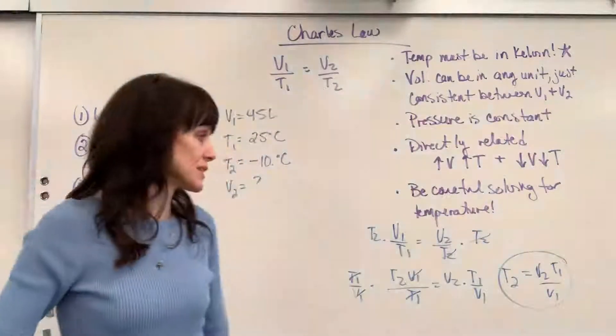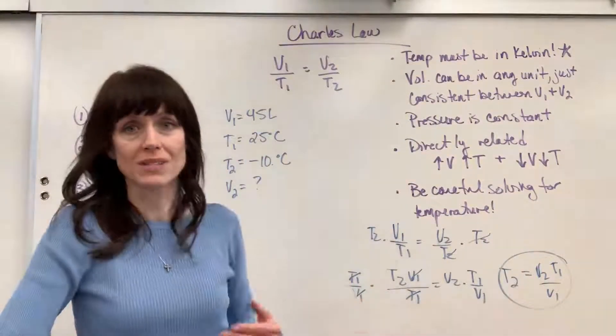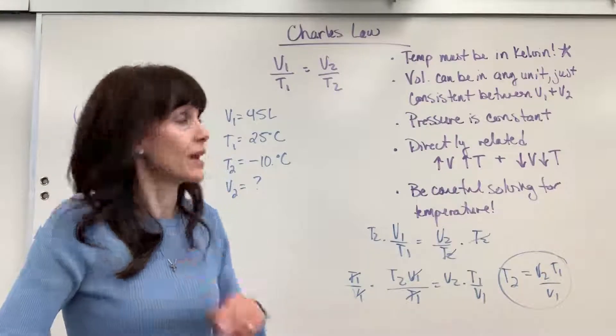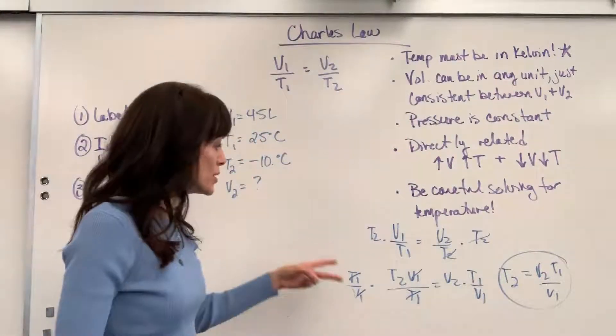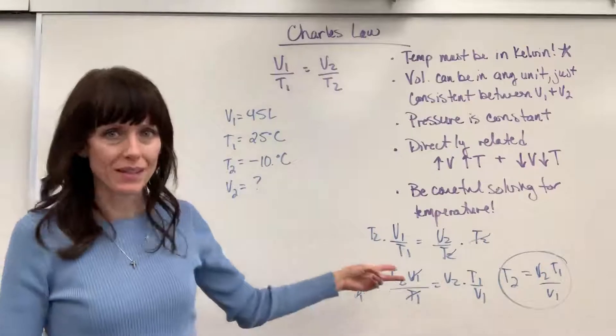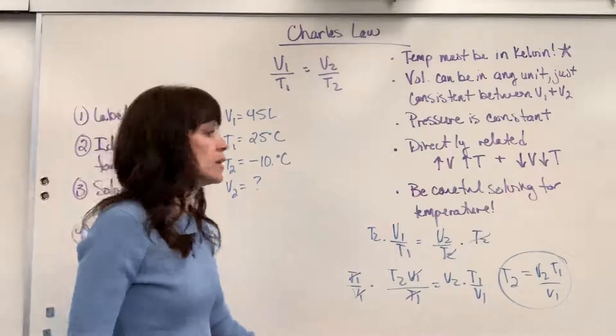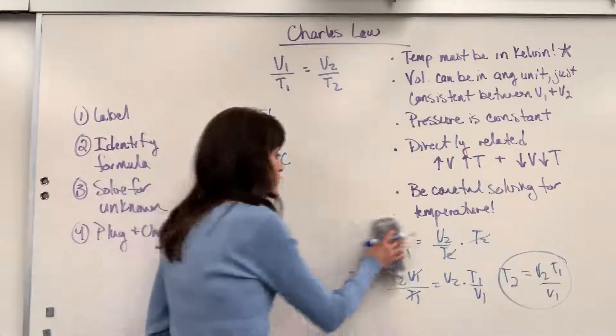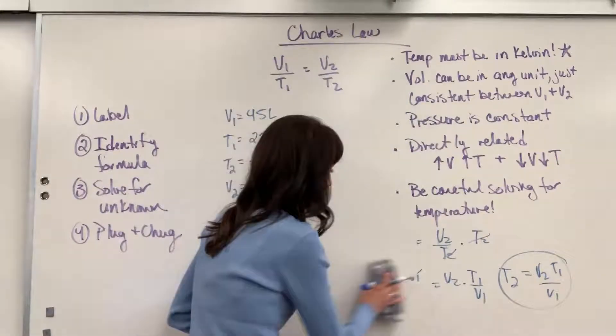So just from years of experience, if students are going to make a mistake, two mistakes that they'll make. They'll forget to convert to Kelvin number one. And number two, they won't algebraically solve for T2 correctly. So just be careful on that. I'm trying to save you some grief.